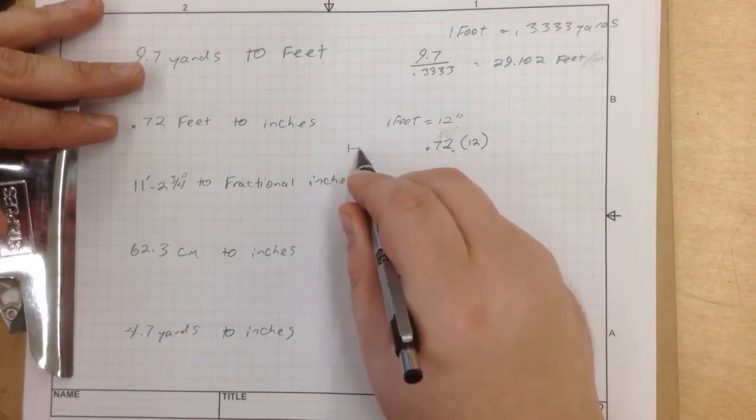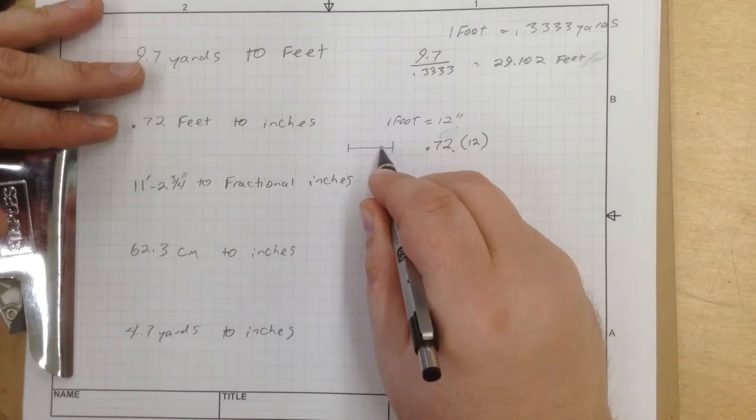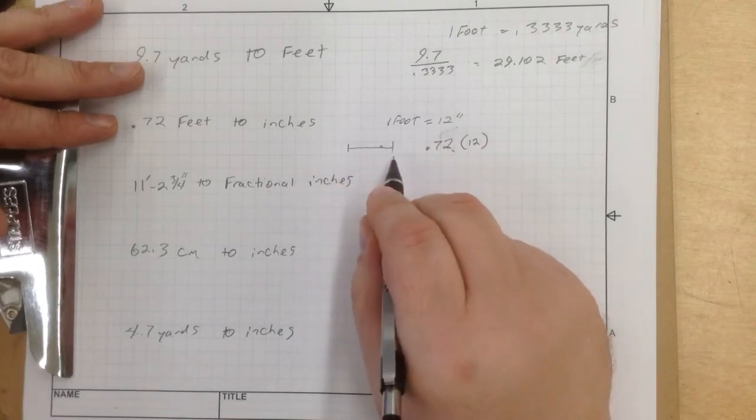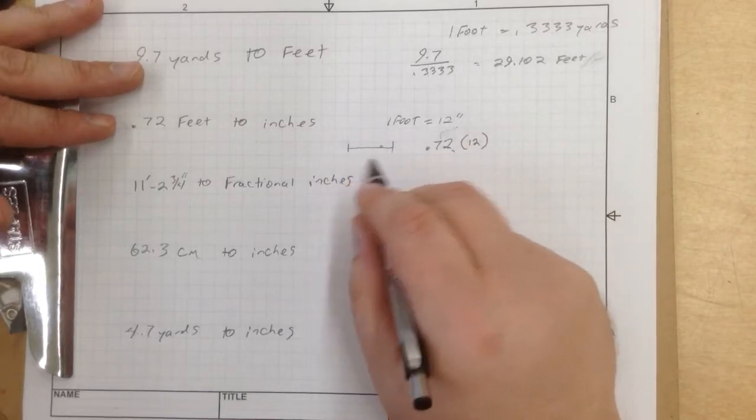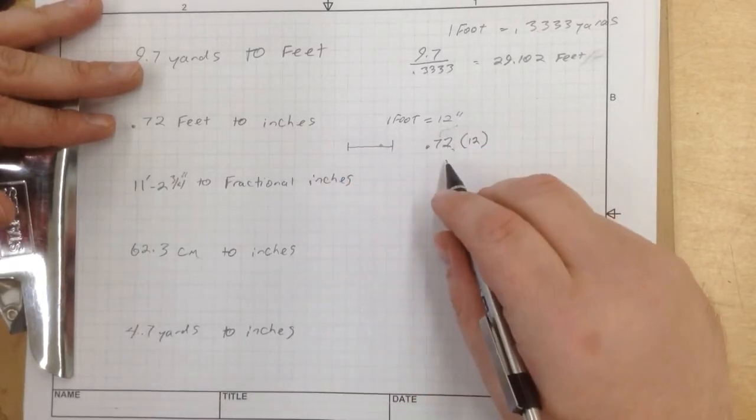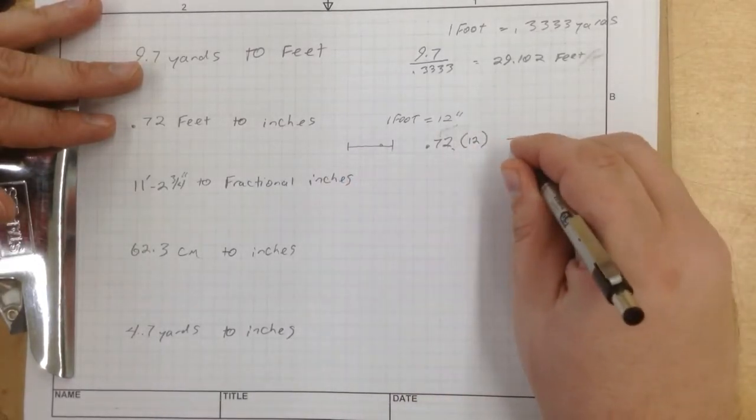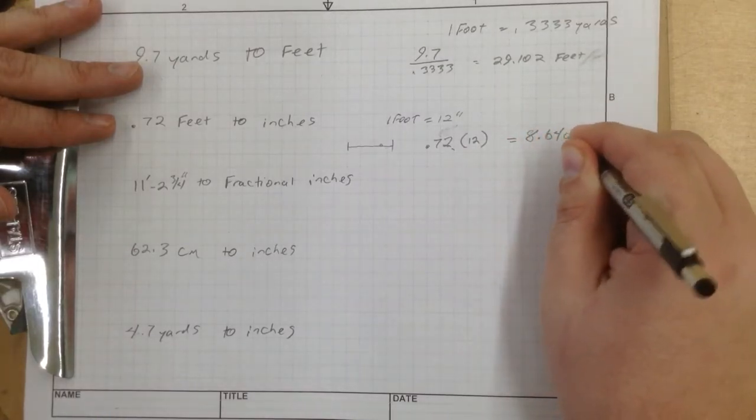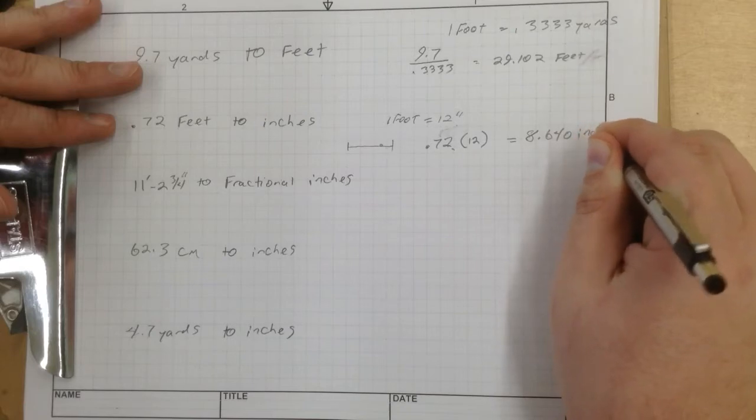The easiest way to do that is to multiply it times 12. So we know, let's say this is a foot. We know we've got that much, and we know that that is a length of a foot. I know it looks like an inch, but just imagine it's a foot.